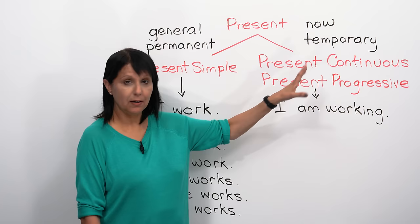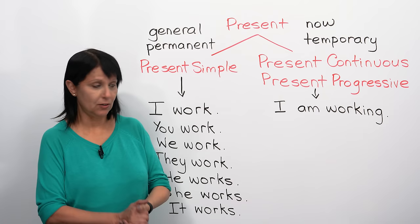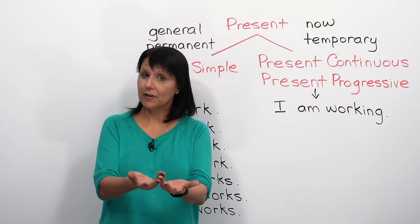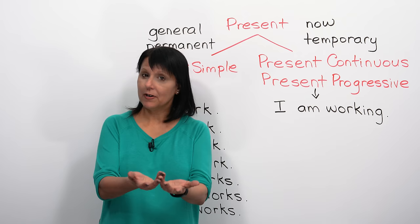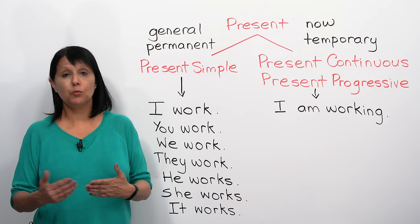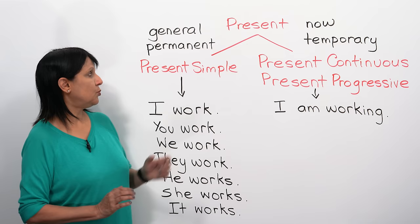When we say I am working, which is the present continuous tense, that is talking about something that's happening now or something temporary. For example, I am teaching, you are listening - all these things are happening right now. But when I say I work, that is in general. For example, I may not be working at this moment, but I work somewhere - I have a job. So when we talk about something that's true in general, that's present simple.